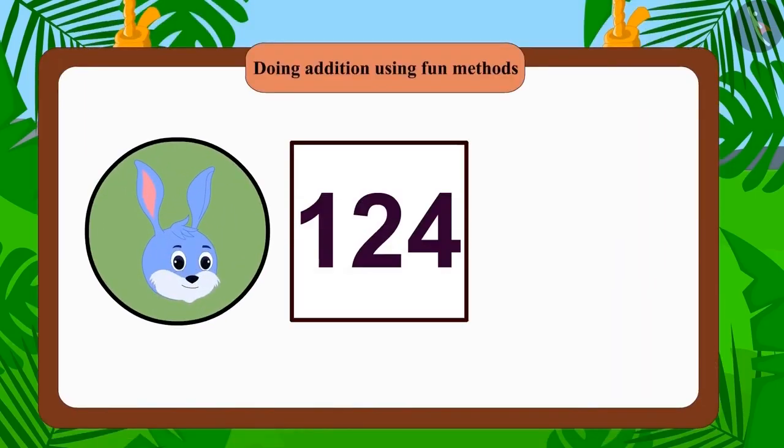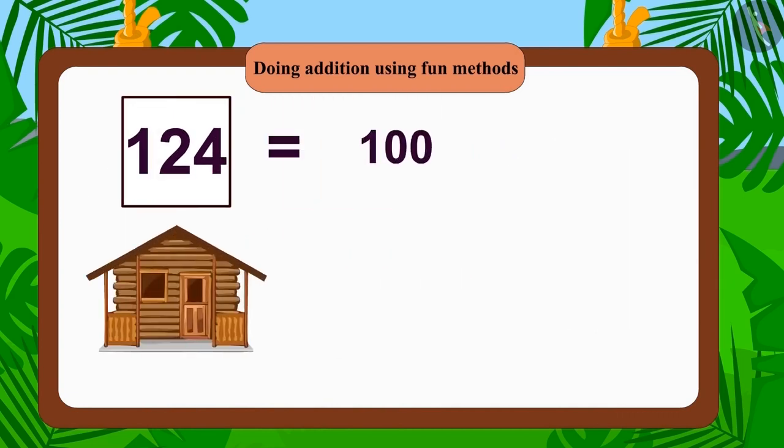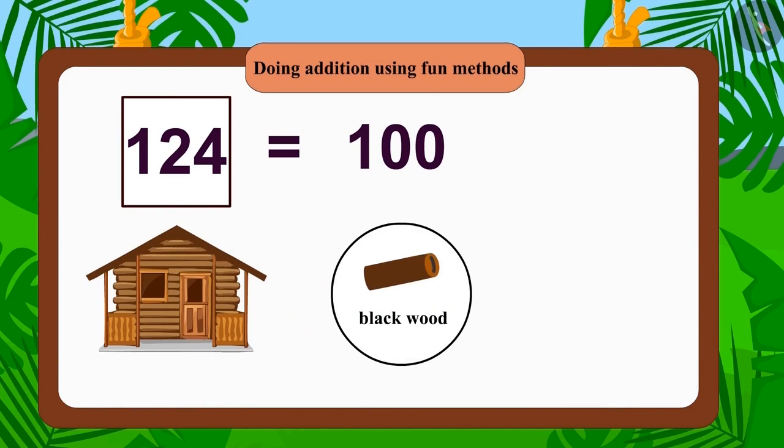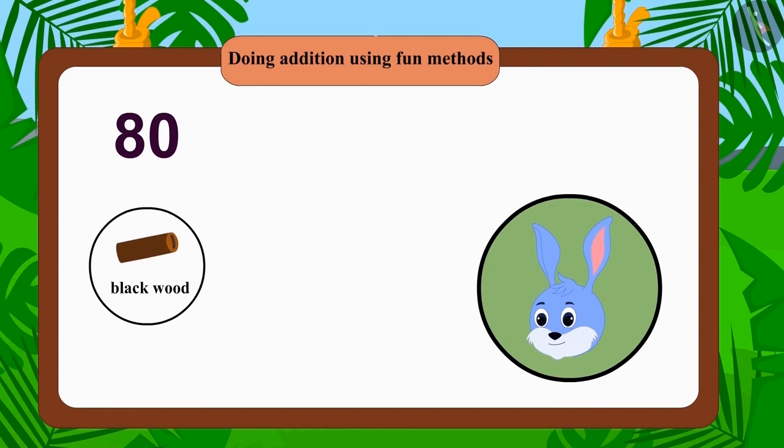Bunny built his house with 124 pieces of wood. He built his house using 100 pieces of black wood and 24 pieces of yellow wood. If Bunny used 80 black wood and 44 yellow wood, would Bunny still have used only 124 wood?